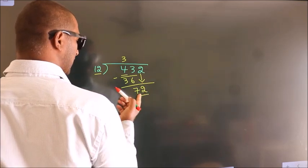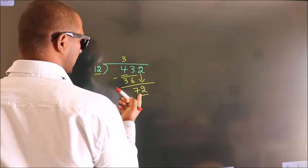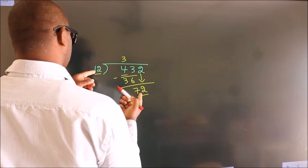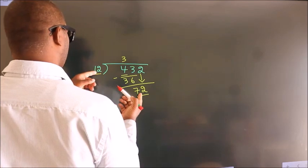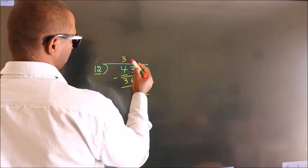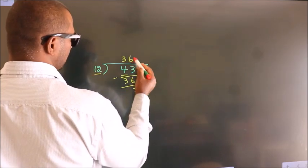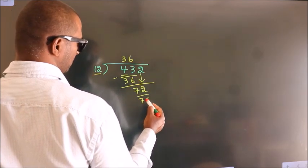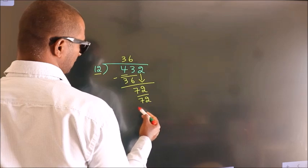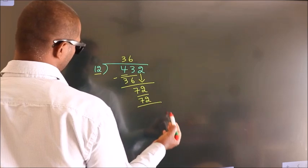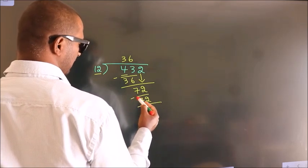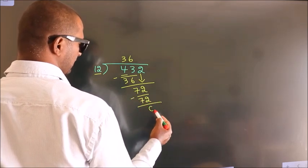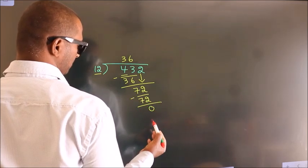When do we get 72 in the 12 times table? 12 sixes are 72. Now we subtract, and we get 0.